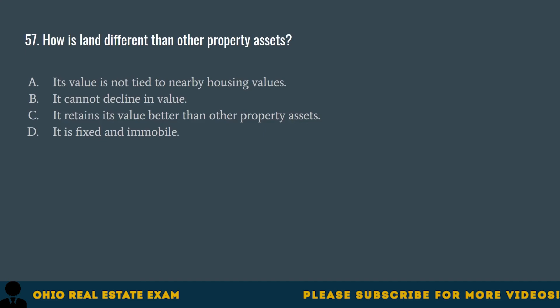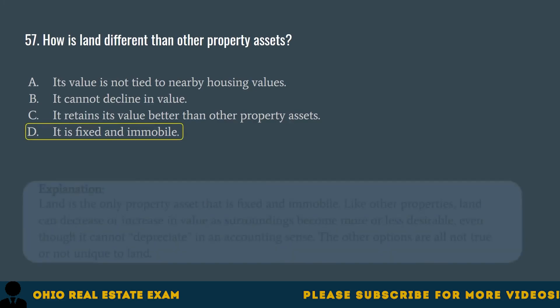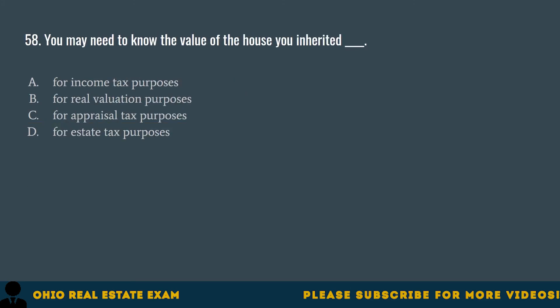Question 57. How is land different than other property assets? A. Its value is not tied to nearby housing values. B. It cannot decline in value. C. It retains its value better than other property assets. D. It is fixed and immobile. The correct answer is D. It is fixed and immobile. Land is the only property asset that is fixed and immobile. Like other properties, land can decrease or increase in value as surroundings become more or less desirable.